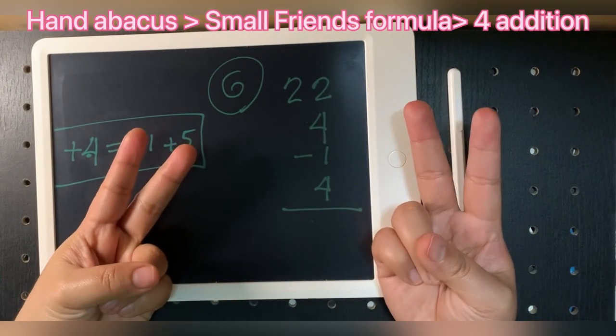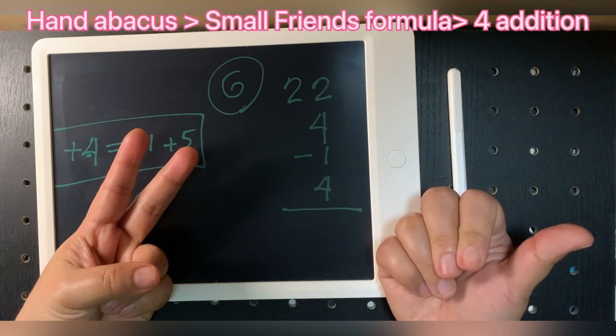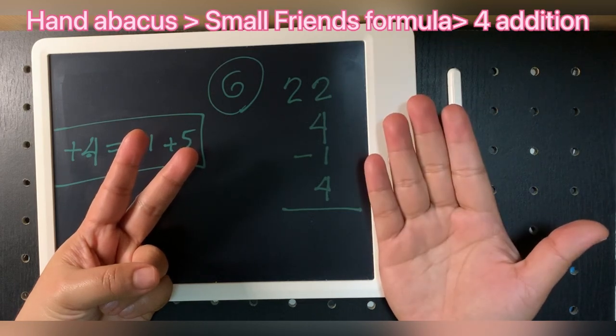Number five: twenty-two, plus four, minus one, plus four. Answer is twenty-nine.